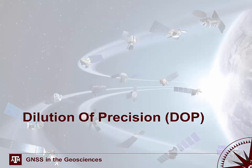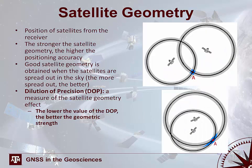Dilution of precision is key to effective survey design. It is a measure of the geometric strength of the satellite constellation relative to the receiver — the position of satellites from the receiver. The stronger the satellite geometry, the higher the positioning accuracy. Good satellite geometry is obtained when satellites are spread out in the sky; the more spread out the satellites, the better the dilution of precision. Two cases are shown: the top case has better dilution of precision than the bottom case.